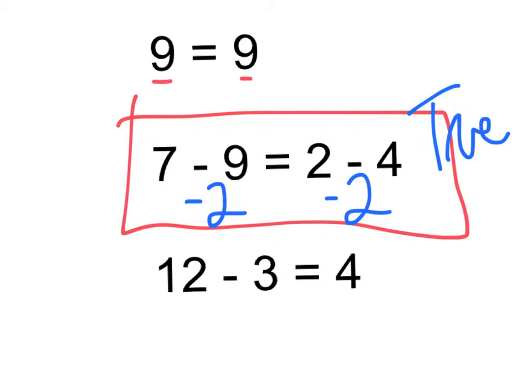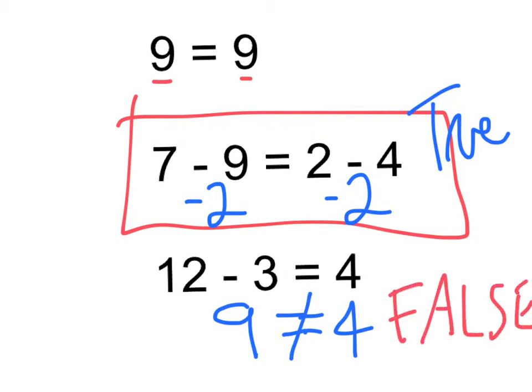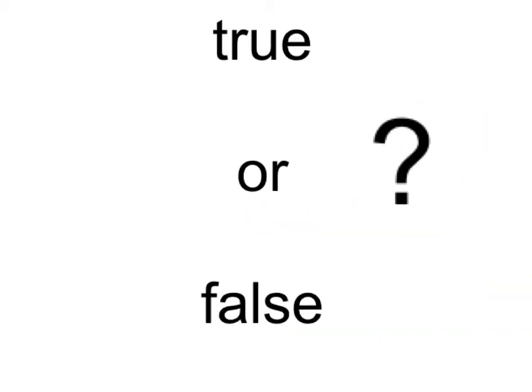Now let's take a look at this last one. 12 minus 3 equals 4. Is that the case? Well, I'm not really sure. 12 minus 3 is 9. Does 9 equal 4? Nope. So we can sort of put a slash through that. That means that this last equation is false. It's not true. So we're going to be evaluating a number of equations and determining whether they are true or false.